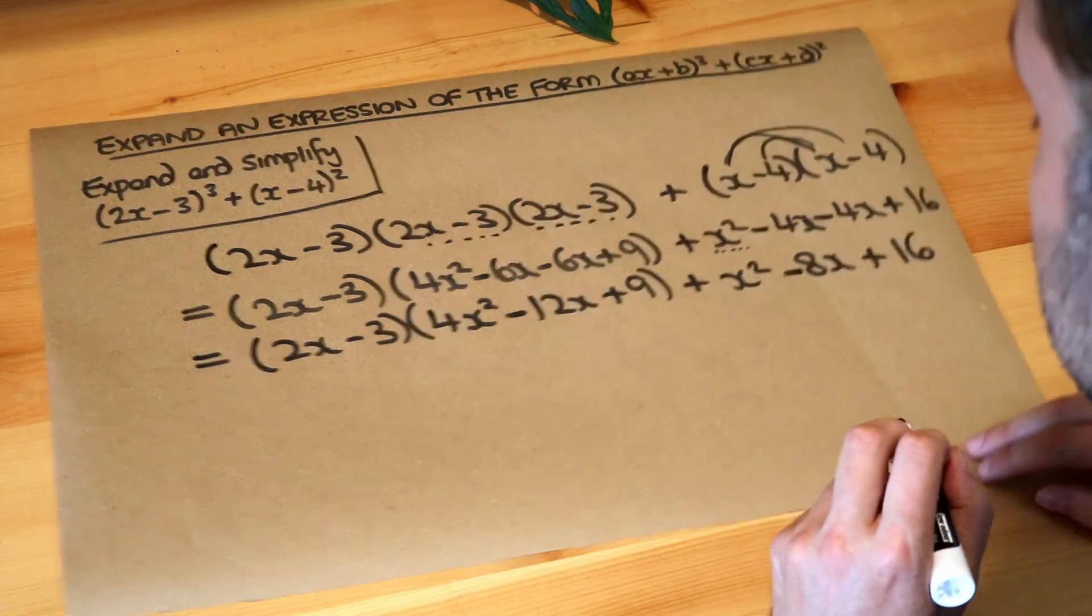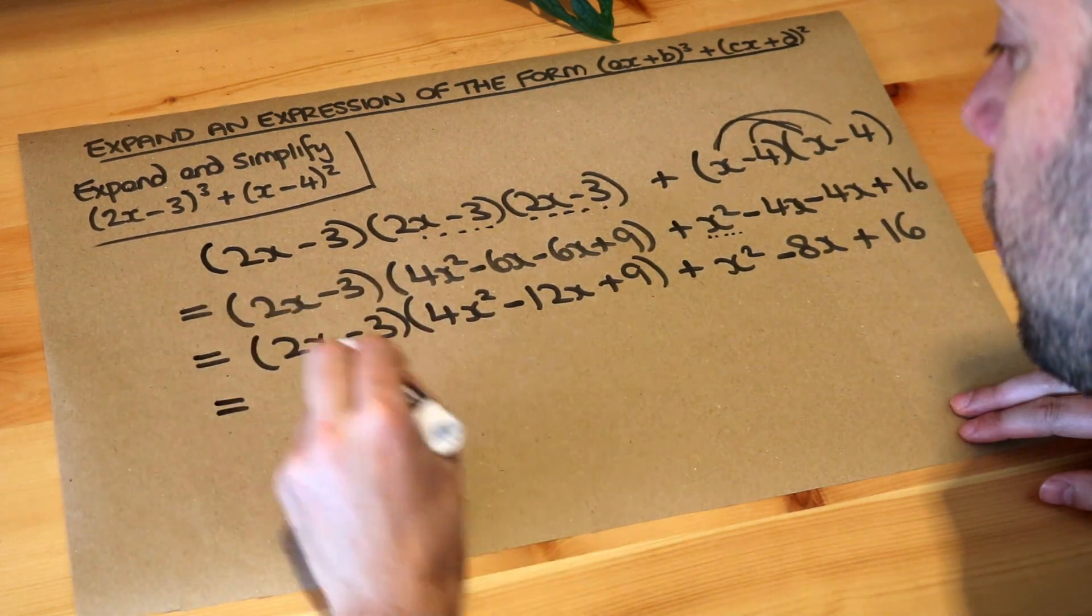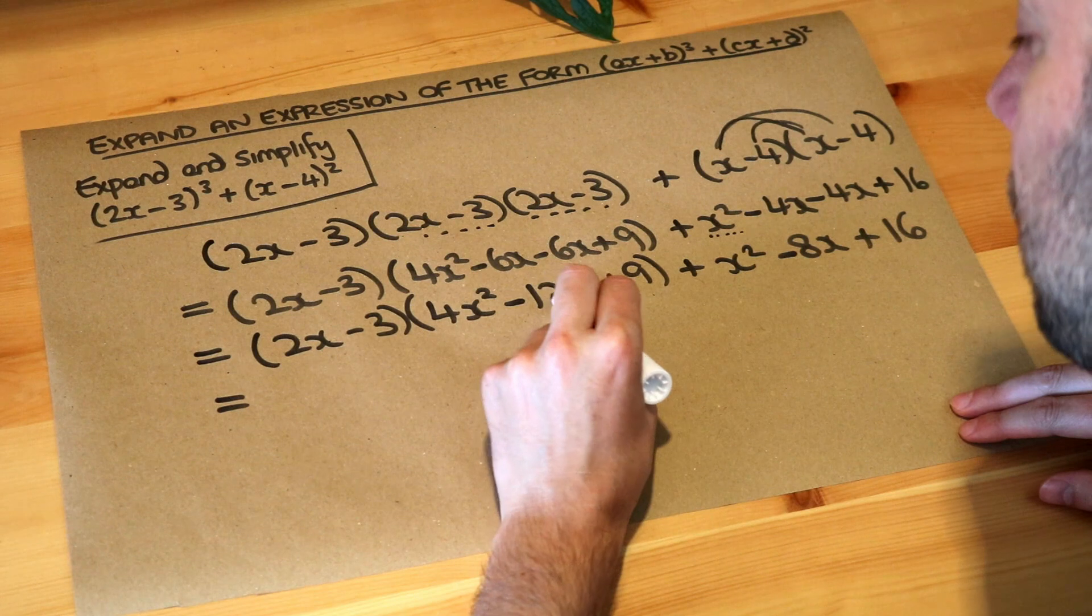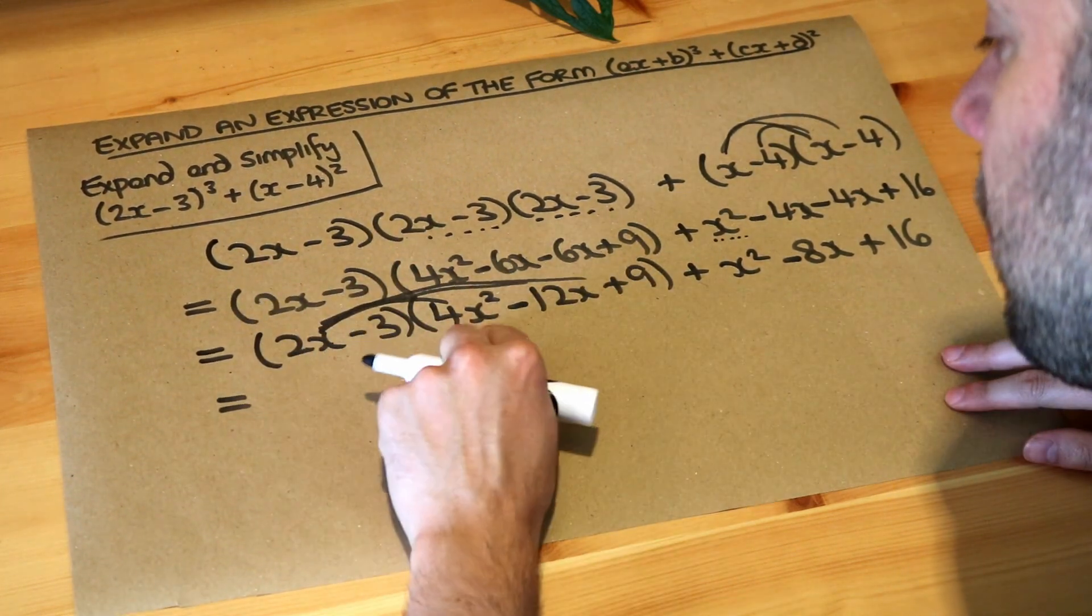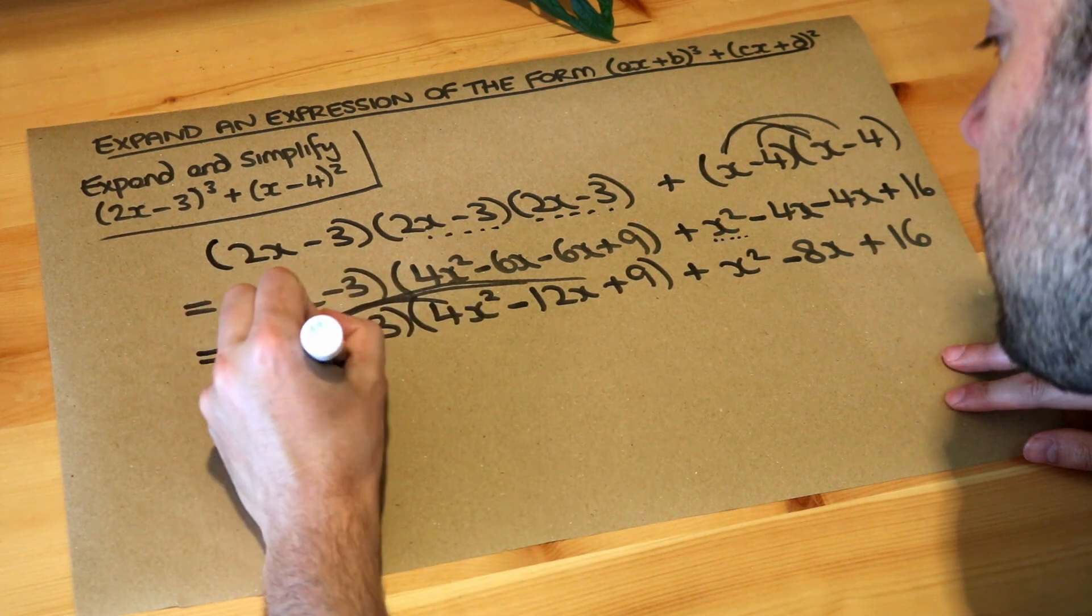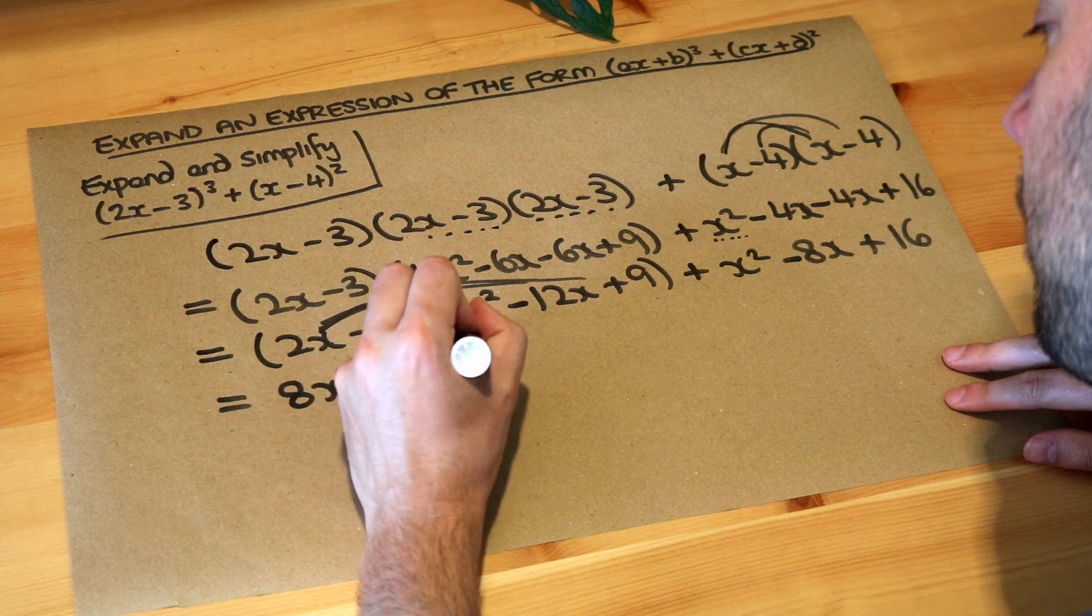It's getting simpler and simpler now. So now we've got to multiply out these two brackets, so we do each thing in the first bracket times each from the second. So we do 2x times each of these things here: 2x times 4x² is 8x³, 2x times -12x is -24x², and 2x times 9 is +18x.